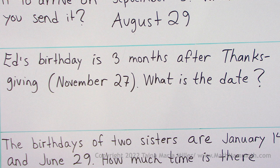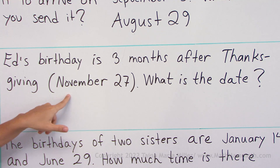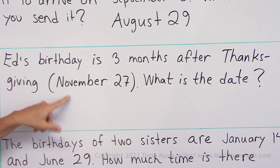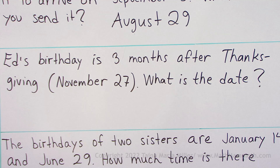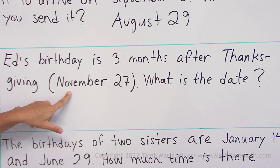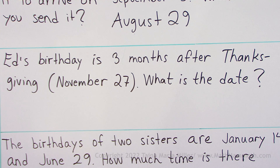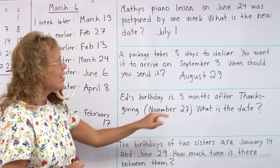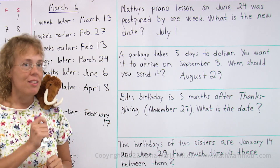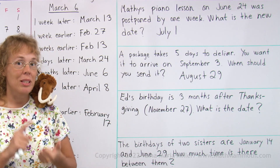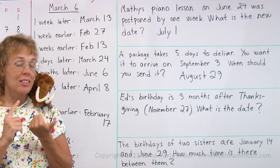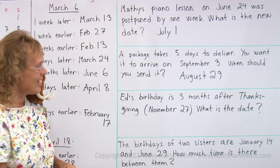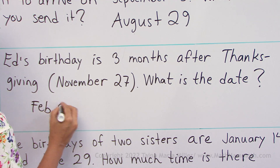Ed's birthday is three months after Thanksgiving, Thanksgiving being November 27th. This actually varies — every year the date of Thanksgiving is different — but this particular year Thanksgiving is on November 27th. Ed's birthday is three months after that. What is the date? Mati knows already. We will count three months after November: December, then January, then February. February 27th.